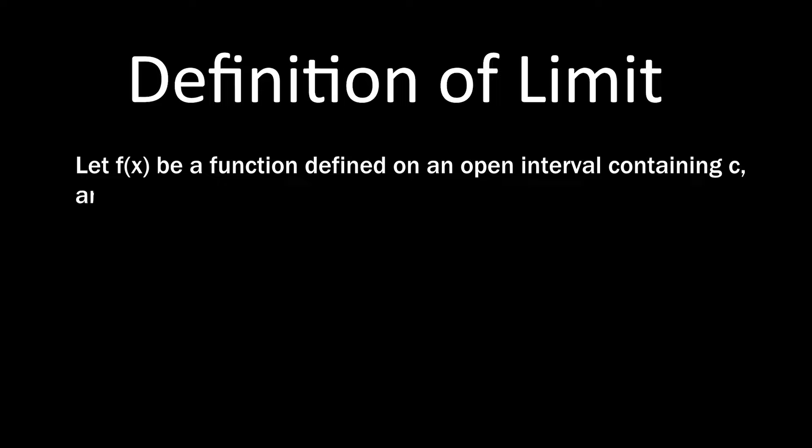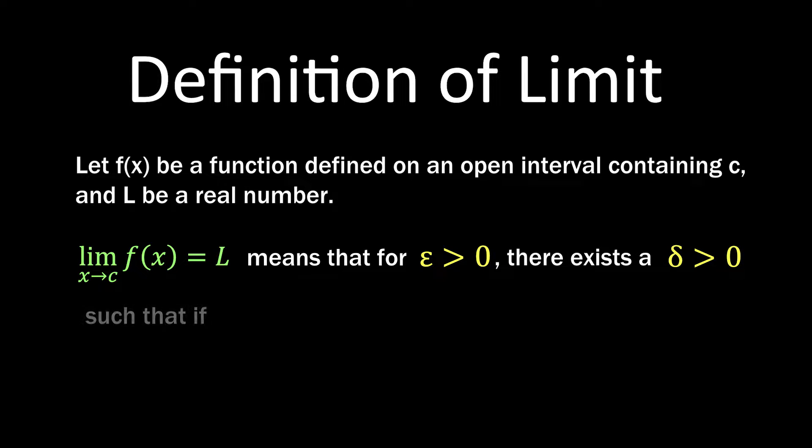The definition of a limit is as follows. Let f(x) be a function defined on an open interval containing c, and L be a real number. The statement lim(x→c) f(x) = L means that for positive ε, there exists a positive δ, such that if |x-c| < δ, then |f(x)-L| < ε.